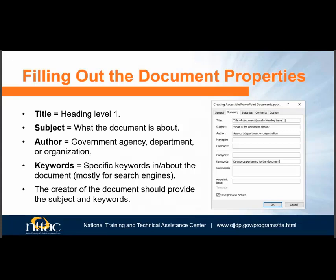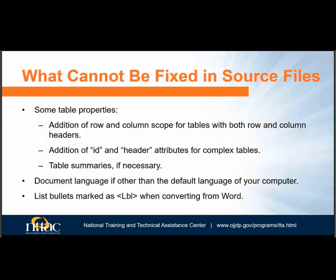At all possible, the creator of the document should provide the subject and keywords. We have discussed what must and what should be fixed in your Word file, but there are some accessibility features that cannot be fixed in source files, such as some table properties, document language if the default language of the user's computer is not the same as the language in the file, and list bullets not marked correctly when converting from Word. These will need to be fixed once the PDF is created, and are not within the scope of this tutorial, but will be addressed in a separate tutorial.